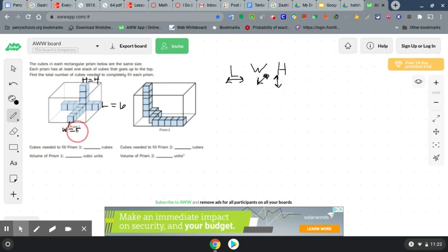So we've got five by four by six or length of six times width of five times height of four. It says cubes needed to fill prism one, right? Cubes needed to fill prism one is six, right, times five rows forward. So the area of the base would be 30 because six times five here is 30. Six times five is 30.